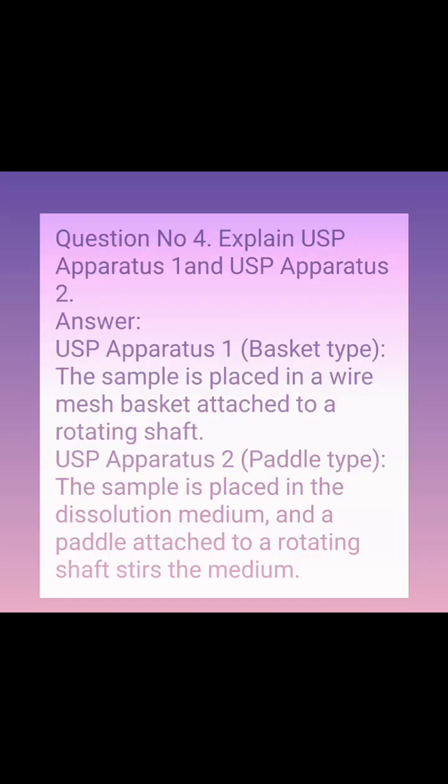Question number 4: Explain USP Apparatus 1 and USP Apparatus 2. Answer: USP Apparatus 1, basket type — the sample is placed in a wire mesh basket attached to a rotating shaft. USP Apparatus 2, paddle type — the sample is placed in the dissolution medium and a paddle attached to a rotating shaft stirs the medium.